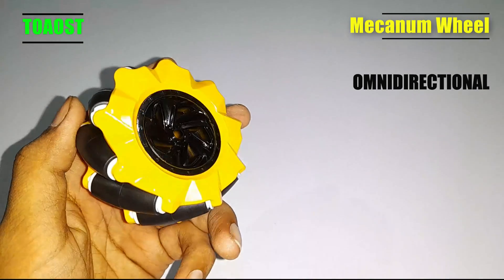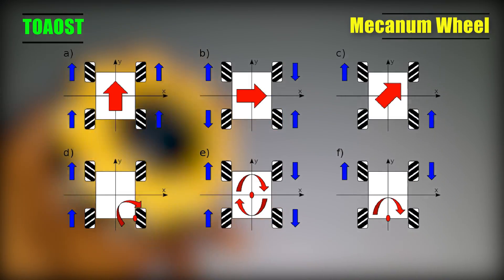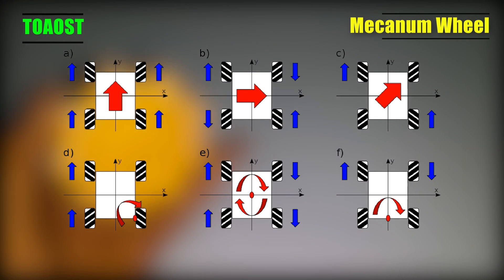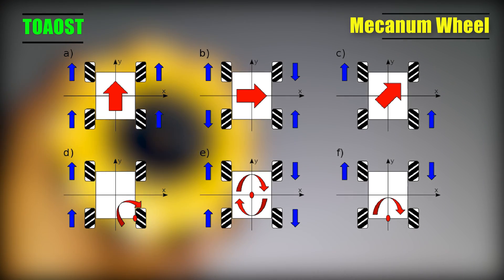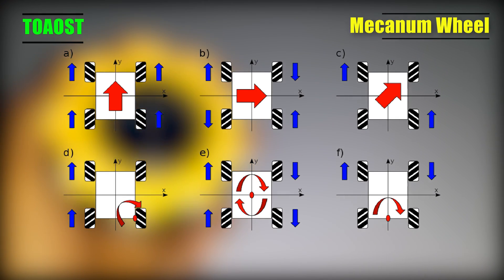This wheel can move in forward, backward, left, right, 360 direction — even in side waves and diagonally. That means, how amazing it is.